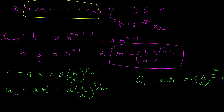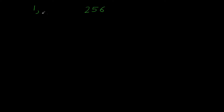So the answer is yes — we can insert any number of terms between two positive numbers A and B such that they form a geometric progression. Note that A and B must be positive. Now let's look at an example: we are given the two numbers 1 and 256, and we want to insert three numbers G1, G2, and G3 between them.